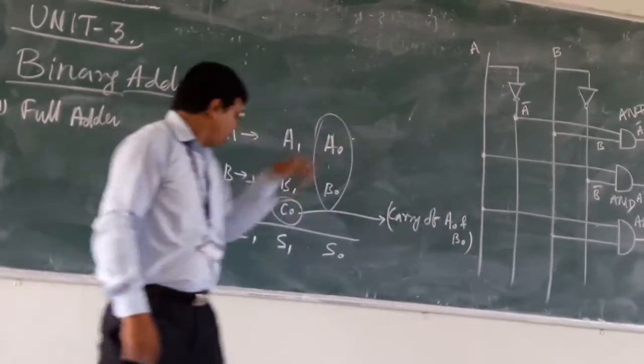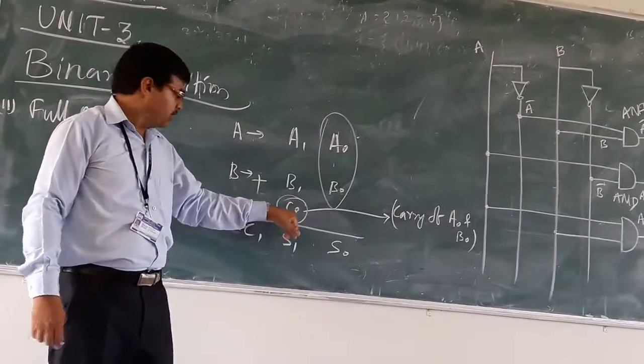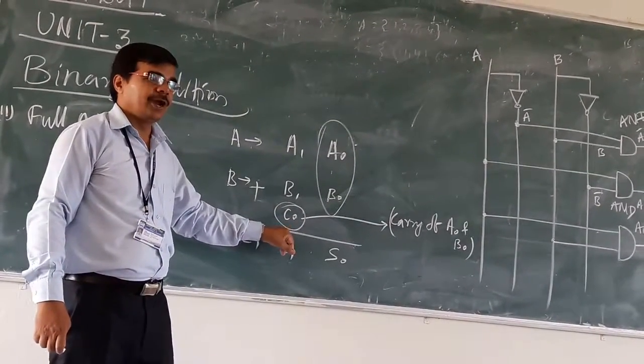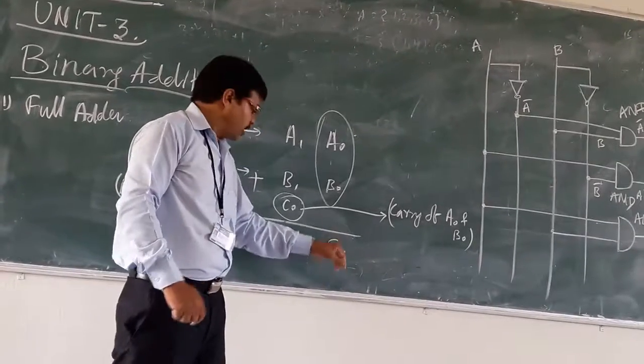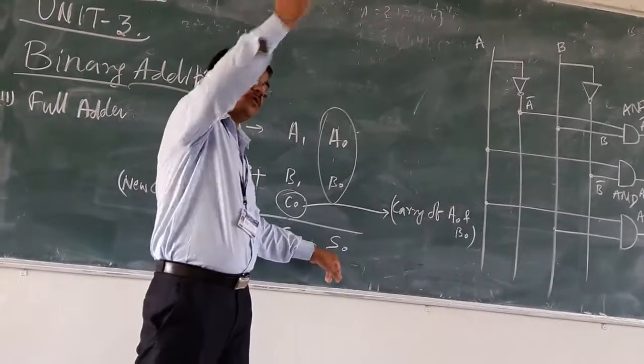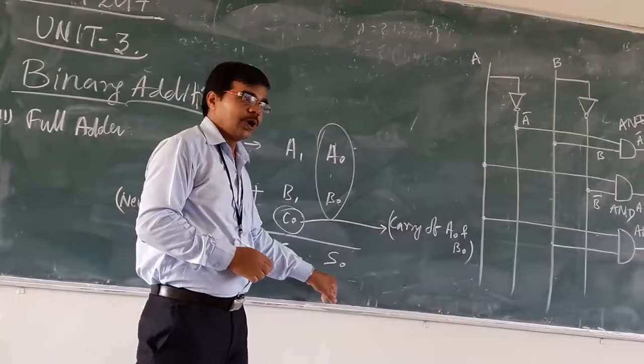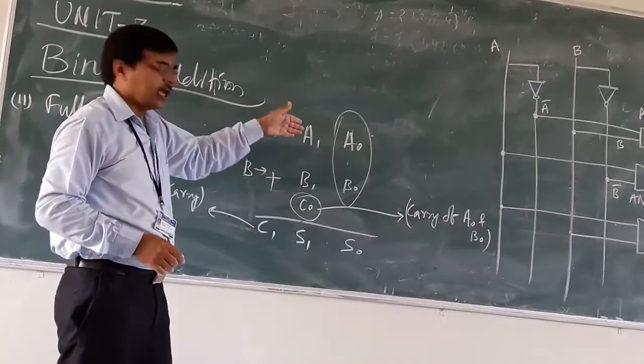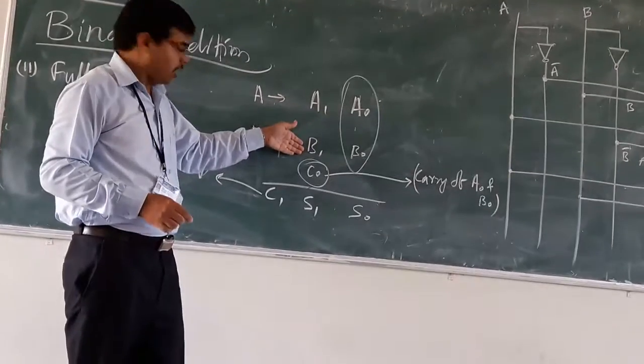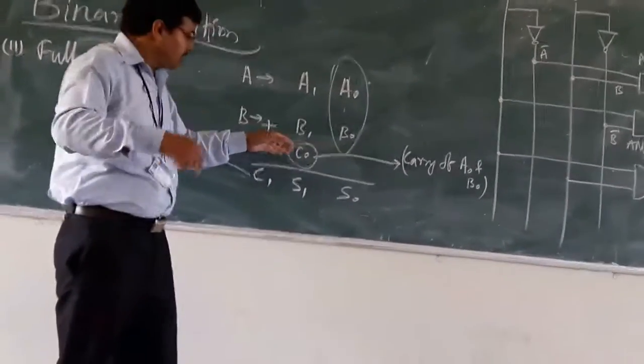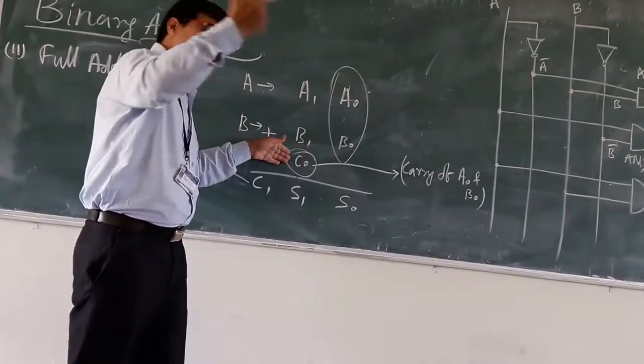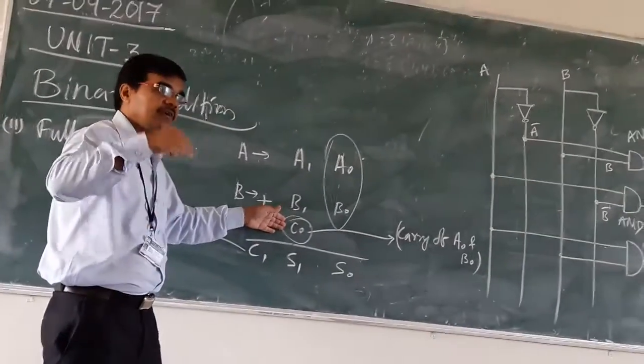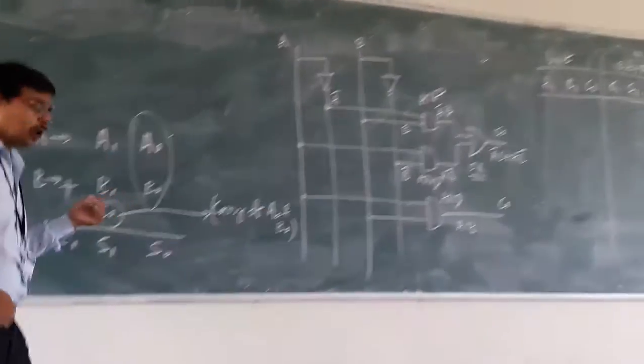So in half adder, whatever carry we are having, so that carry is this one. And S0, this is the sum that we are having in case of your half adder. So now what we are having? Now we are having A1, B1 and C0. C0 is the previous carry of your A0 and B0.